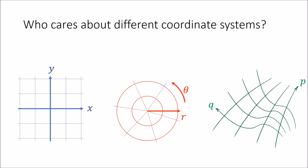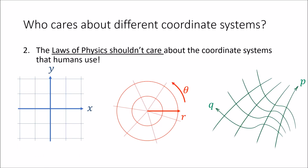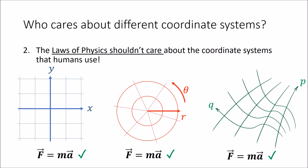The second reason why it's important to understand different coordinate systems is that coordinate systems are invented by humans, and the laws of physics that describe real physical objects shouldn't depend on things invented by humans. So when studying the laws of physics we need to make sure that the physical laws we come up with work in all coordinate systems, or else they wouldn't make much sense.